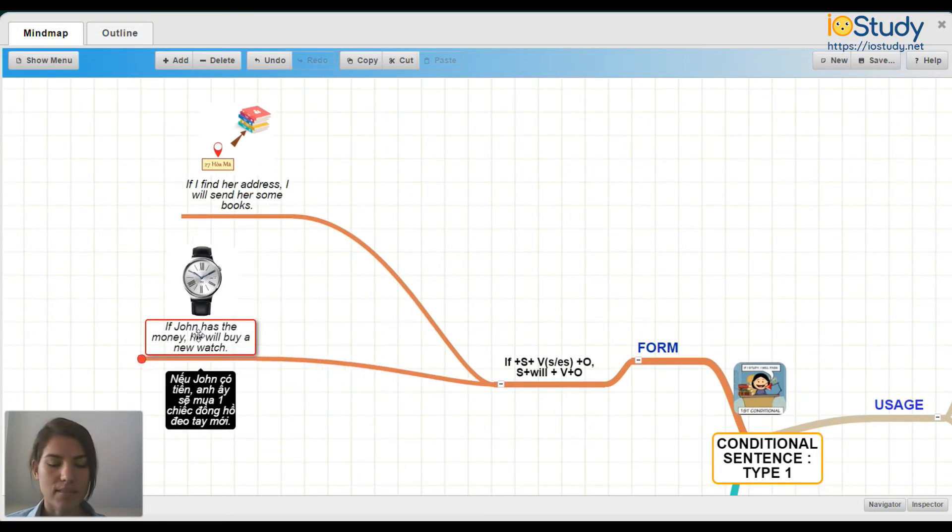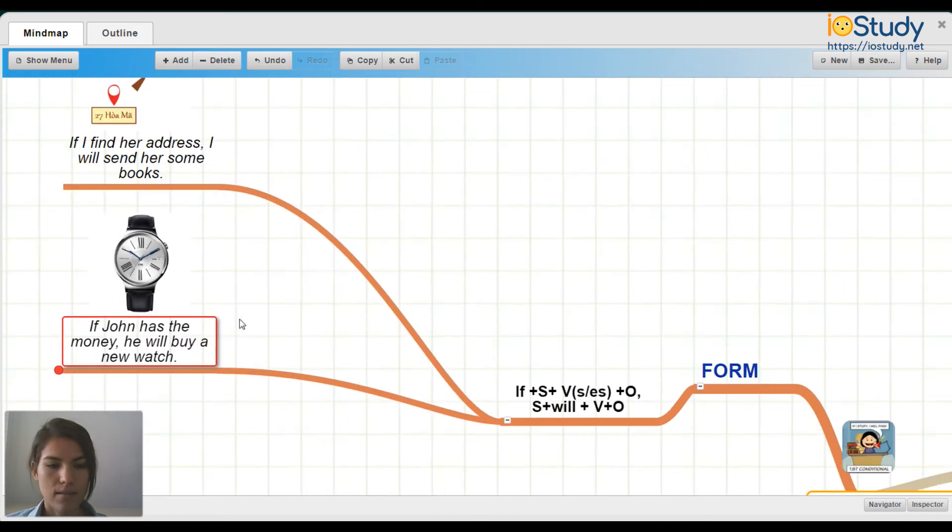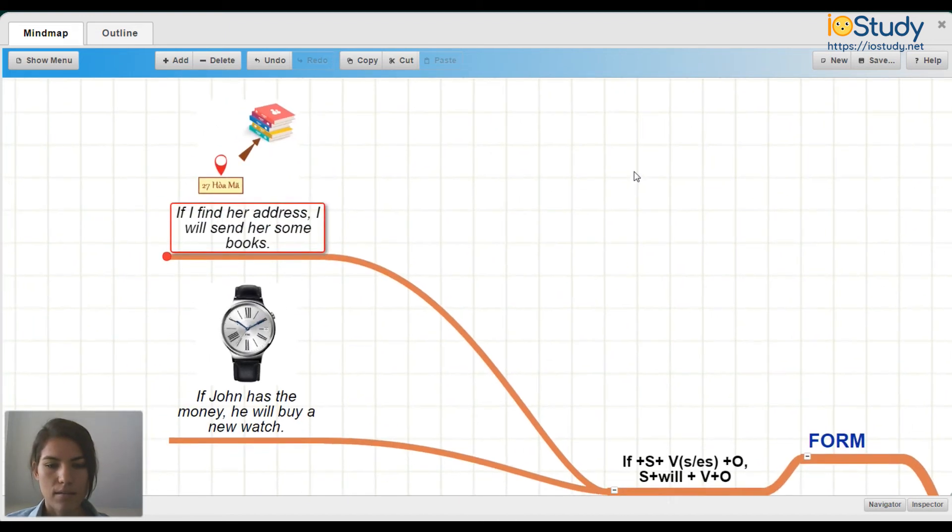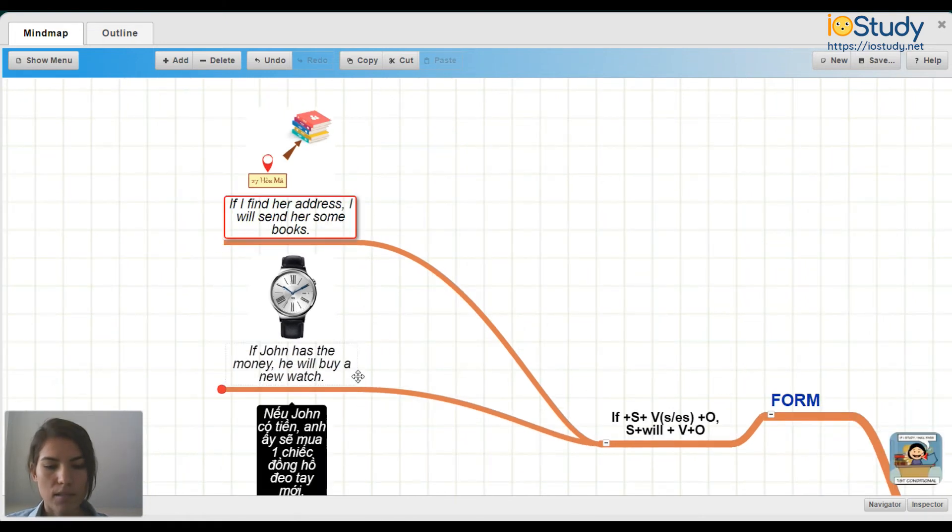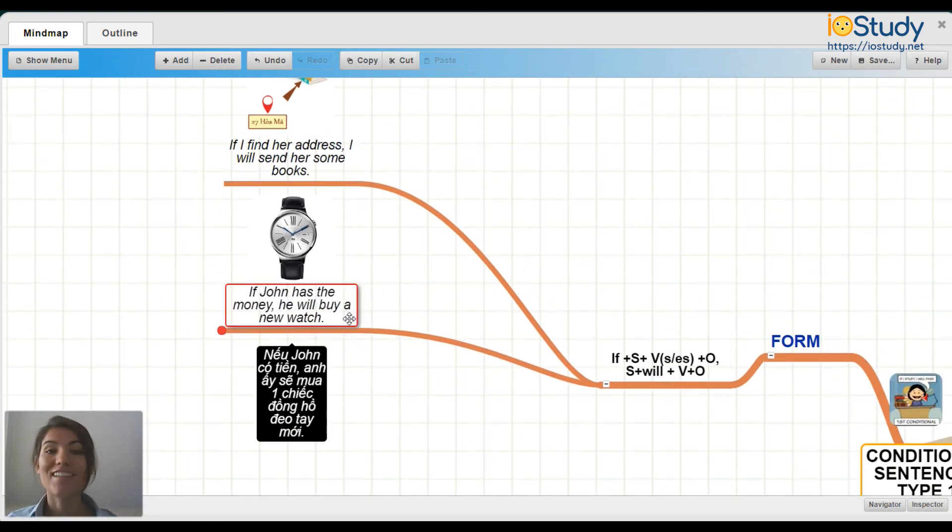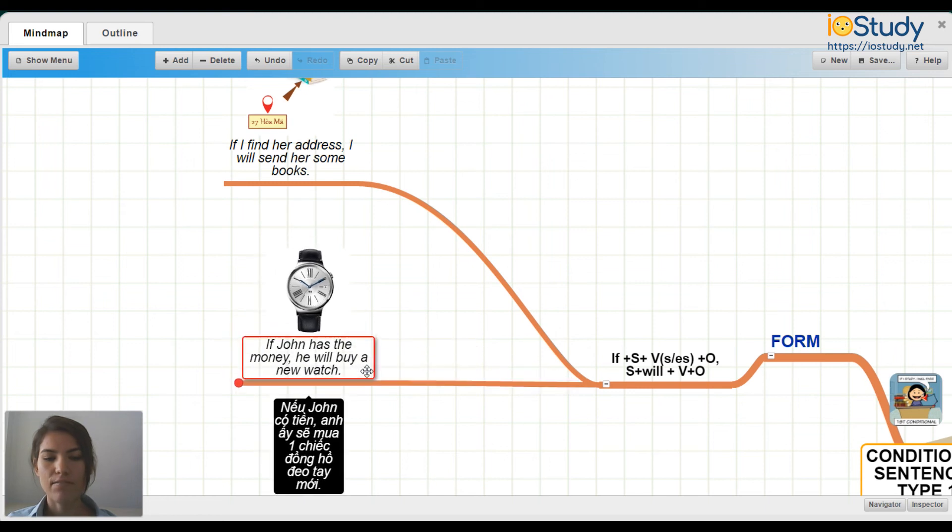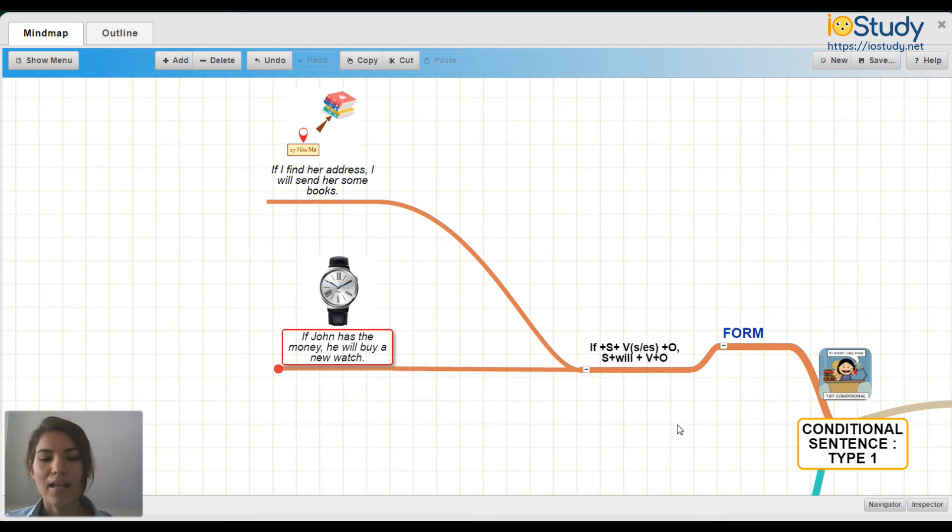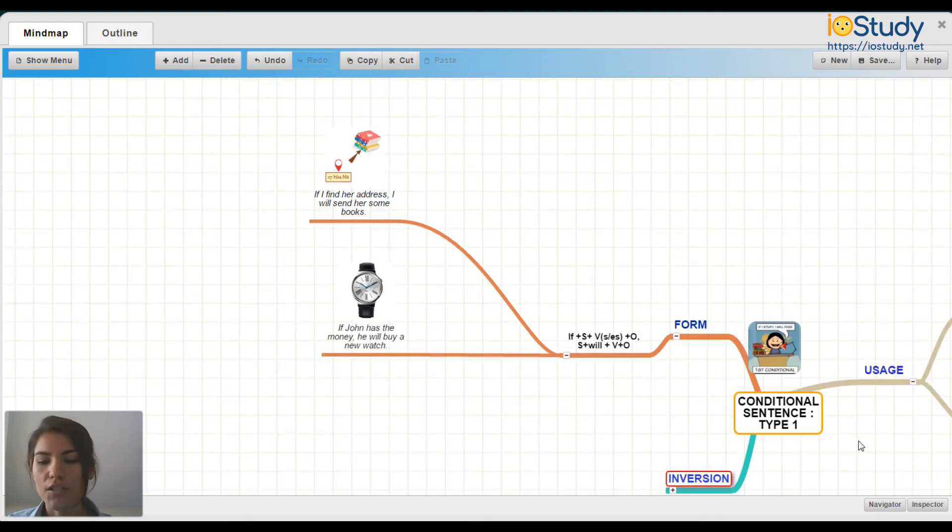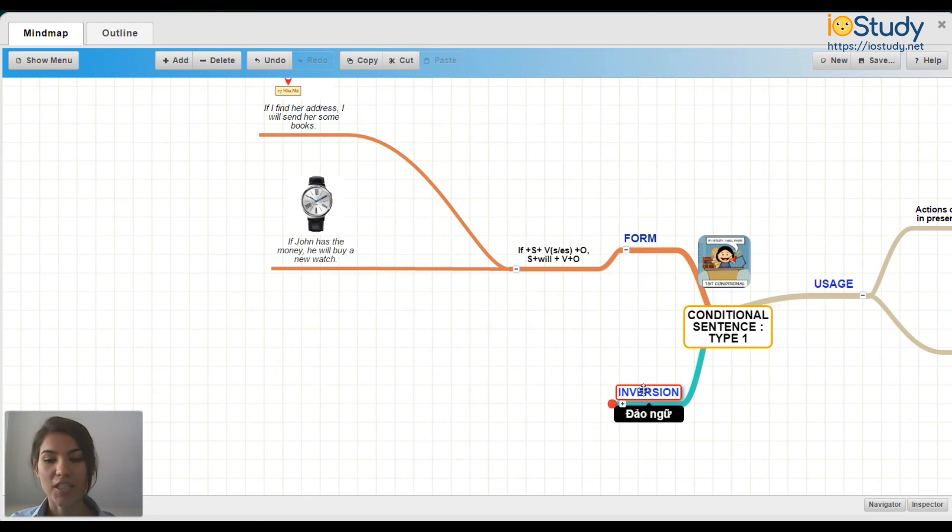Next example of the sentence. So if John has the money, he will buy a new watch. So we have the same form there. Both of these sentences follow the same form. So now let's move on to using it in inversion.